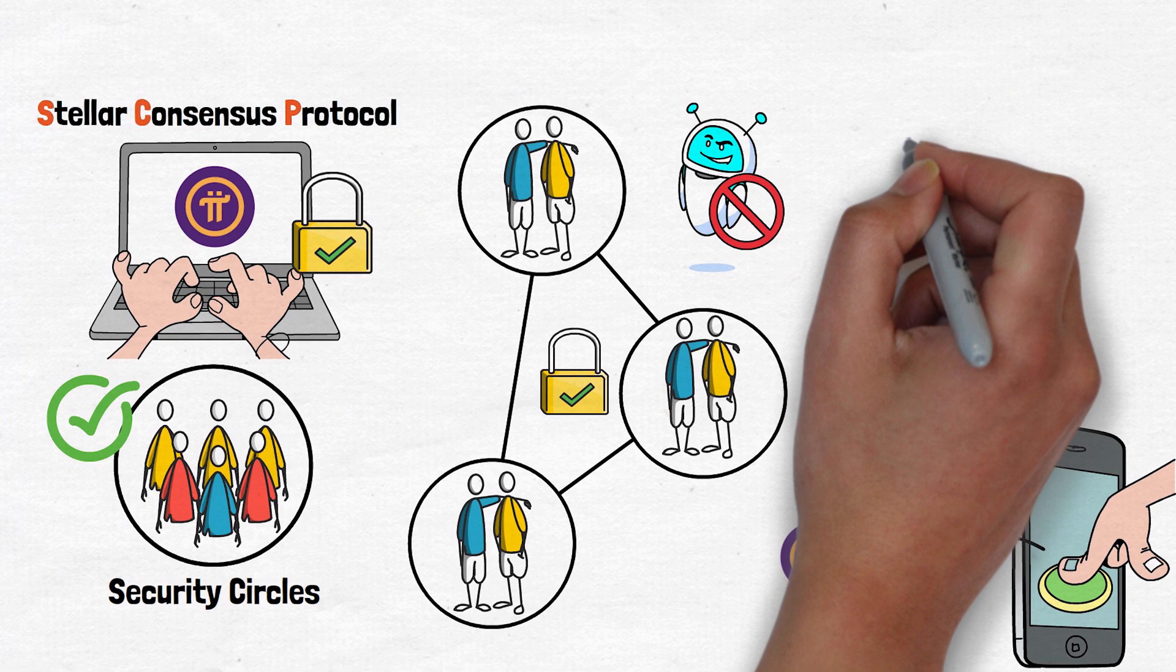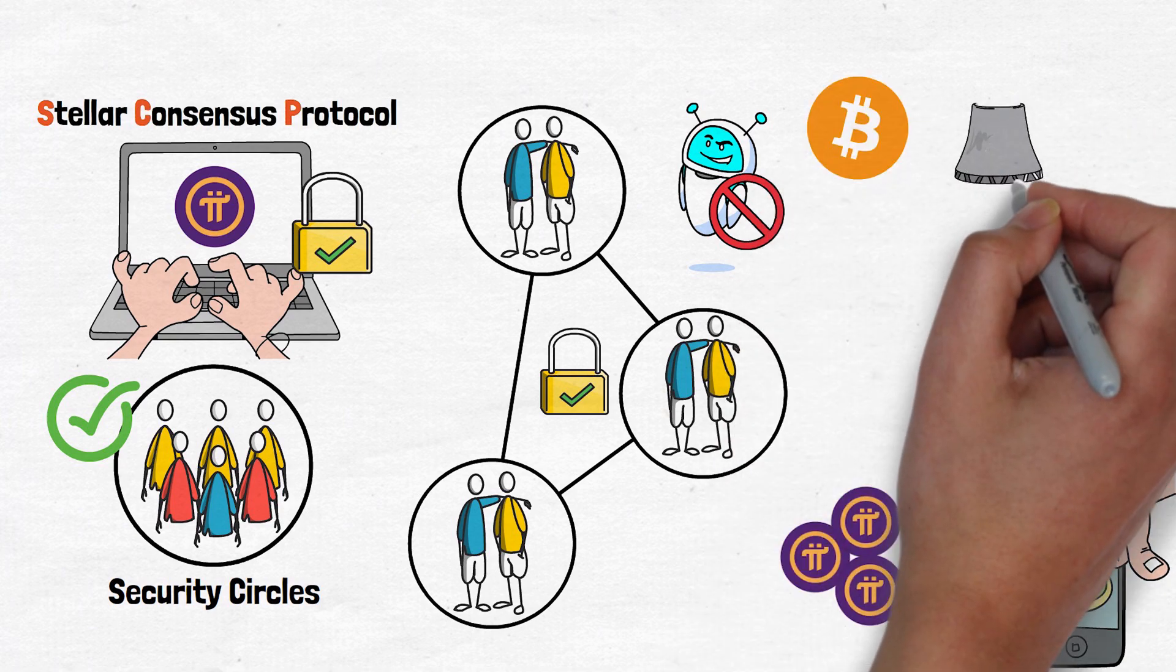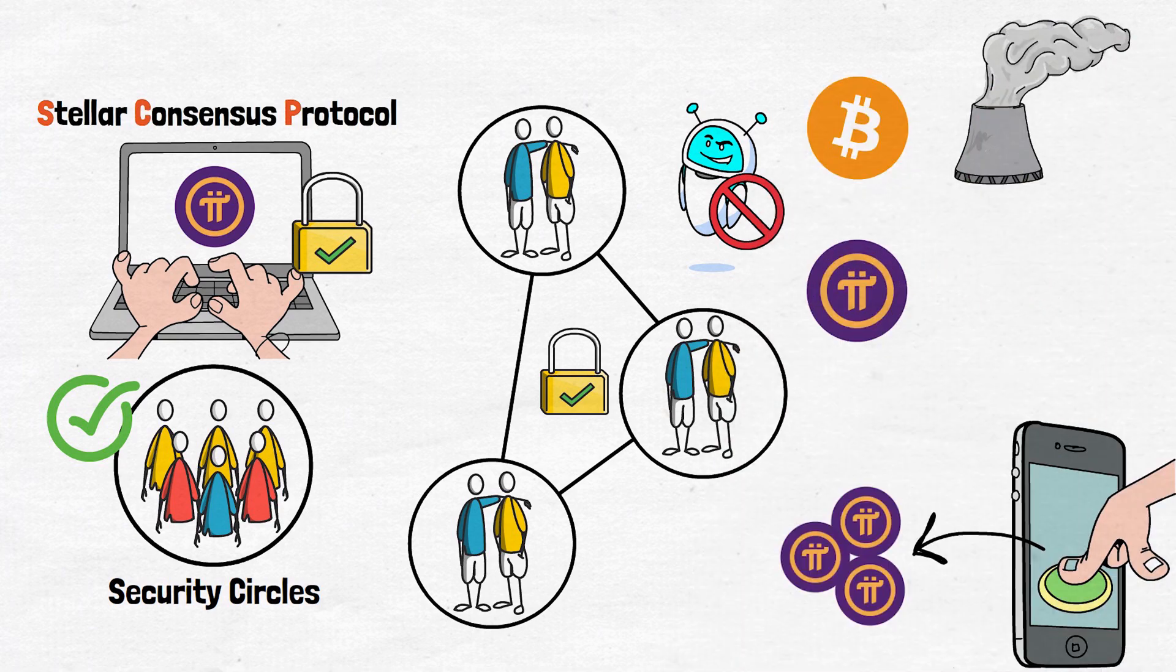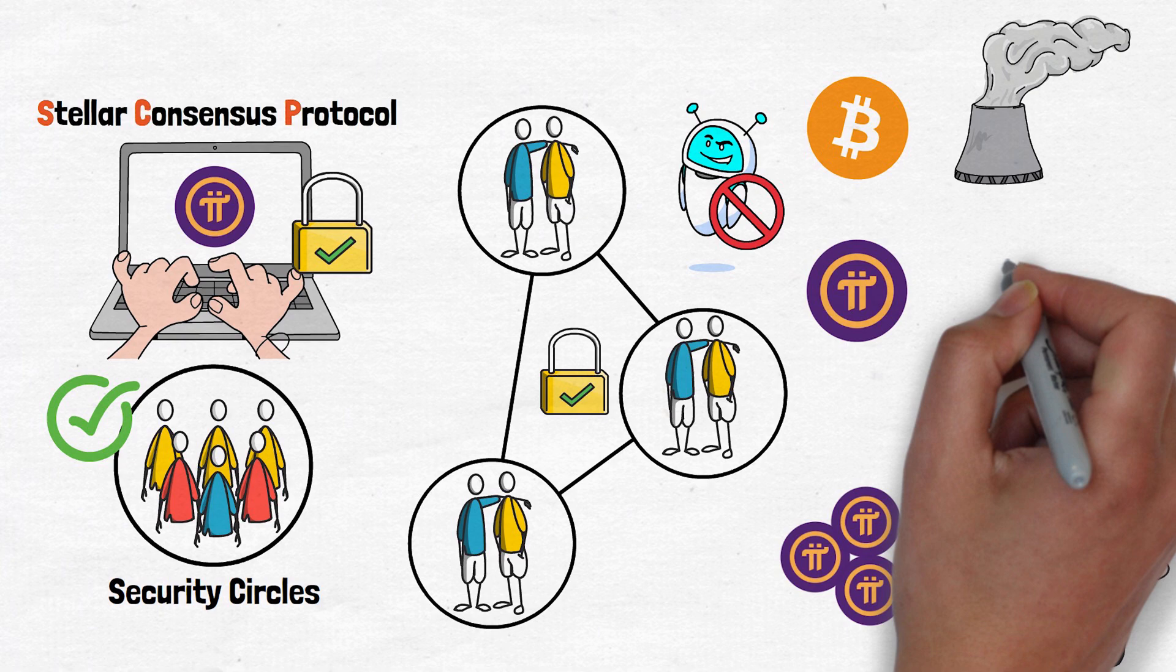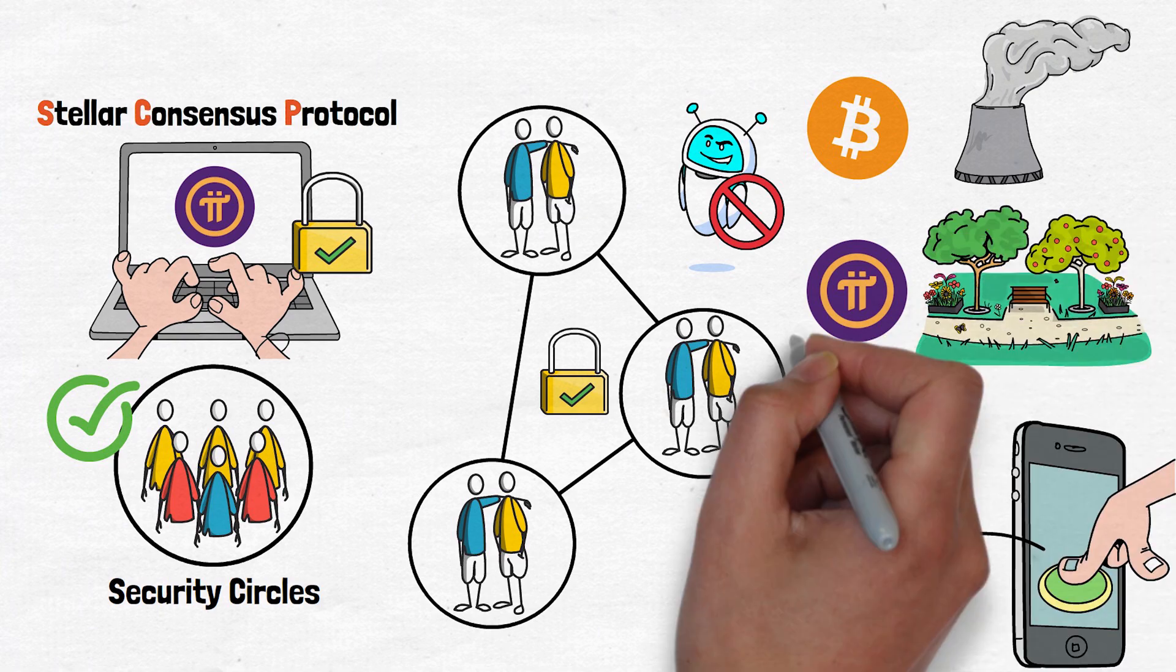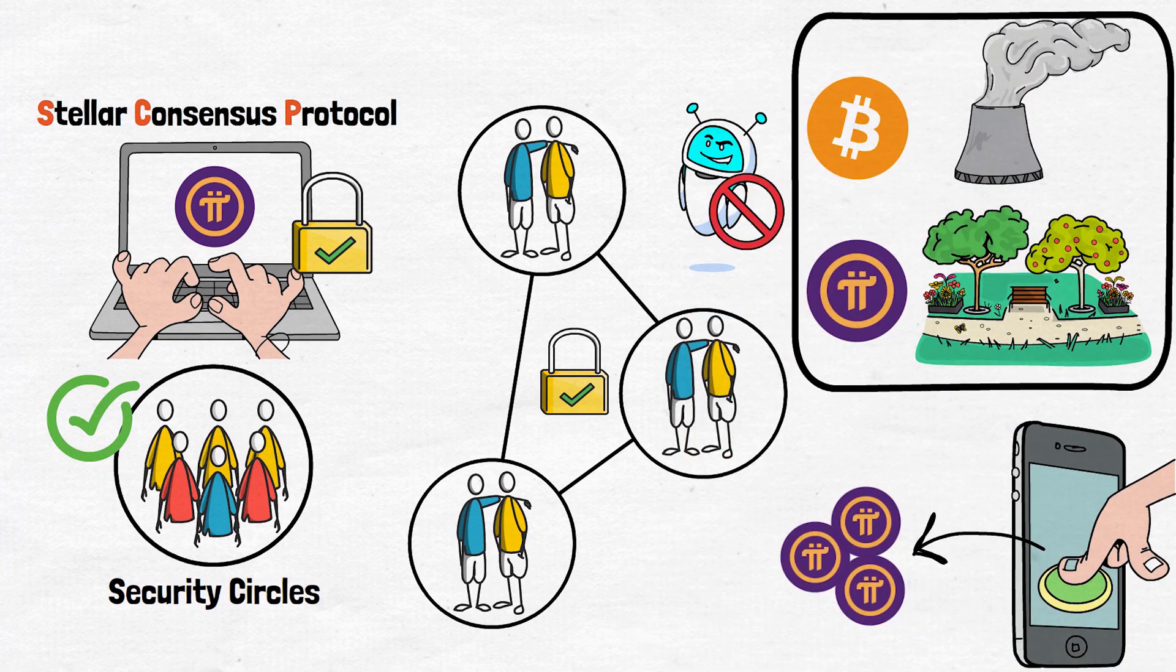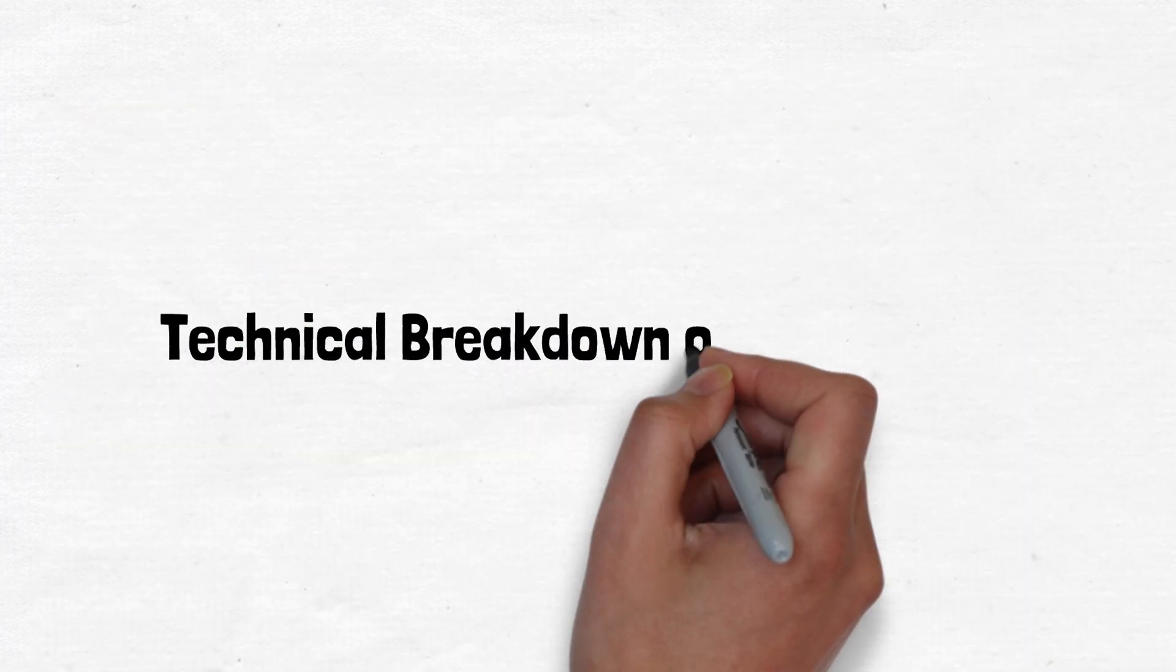Unlike Bitcoin, which has faced criticism for its environmental impact, Pi uses virtually no energy to function. It's supposed to be eco-friendly and designed to scale without consuming massive amounts of energy. Now, let's dive a little deeper into how Pi Network is built behind the scenes.